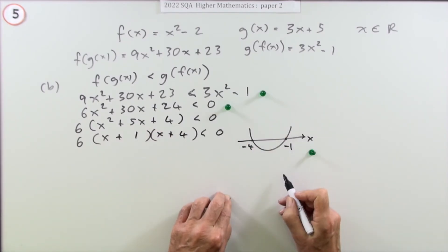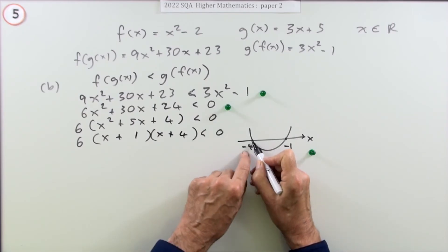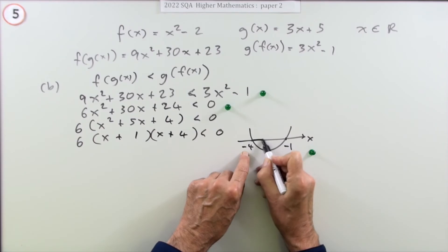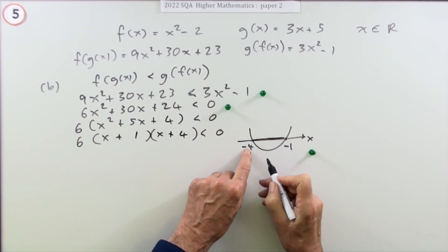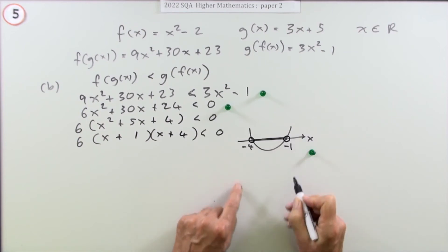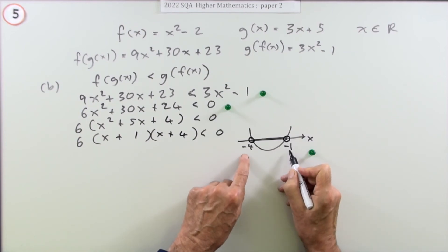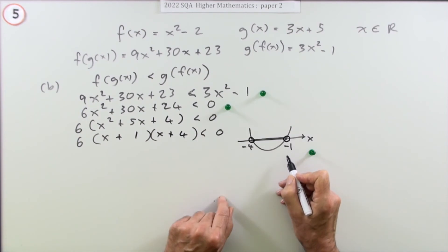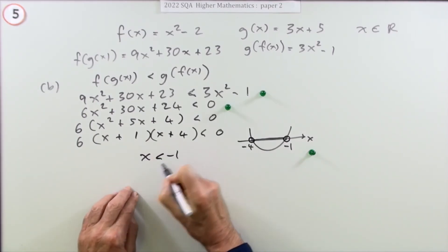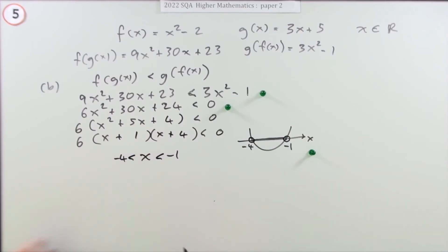What the picture shows is that between negative 4 and negative 1, any x gives a negative answer. But you're not including negative 4 or negative 1 because they give zero, not less than zero. So the answer is negative 4 less than x less than negative 1.